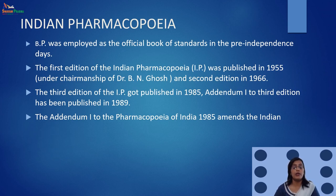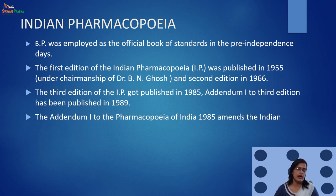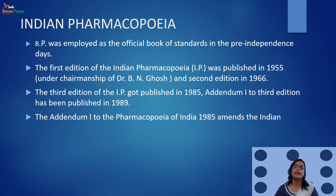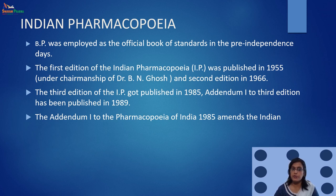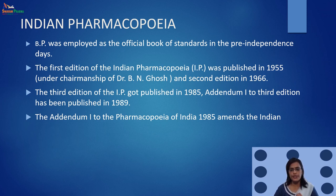Now we will talk about Indian pharmacopoeia — what standards of drugs are there and what type of monographs are there. Before independence, the British pharmacopoeia was employed as the official book of standards for drugs and pharmaceuticals. The very first edition of Indian pharmacopoeia was published in 1955 under the chairmanship of Dr. B. N. Ghosh. The second edition was introduced in 1966.